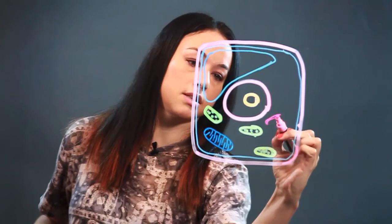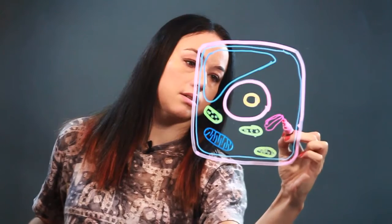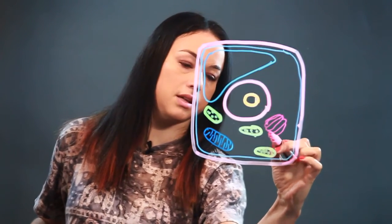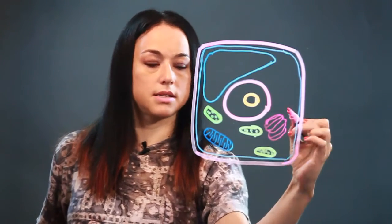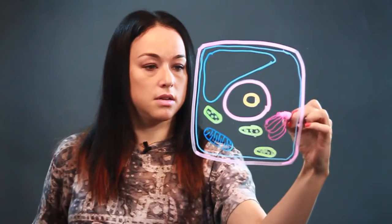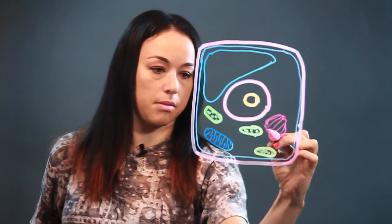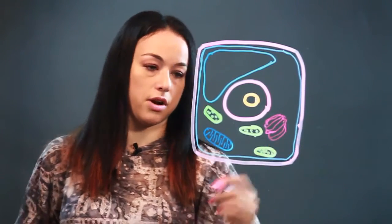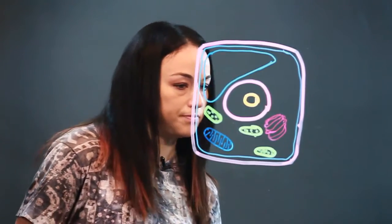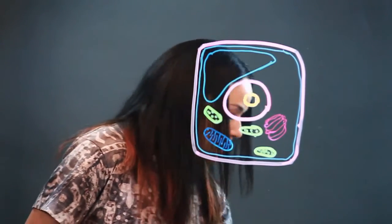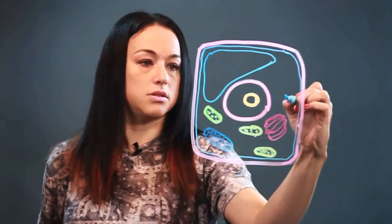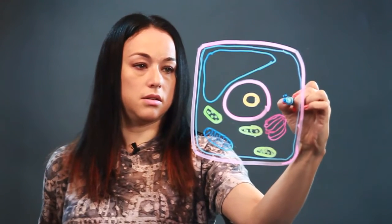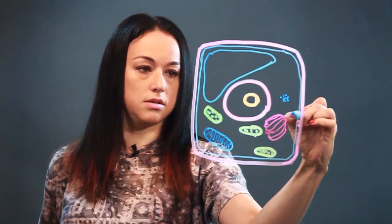Then there's this thing that looks like this, and it's called the Golgi body. It helps with the excretion process of the cell — it packages stuff for export from the cell. And there's also this stuff called ribosomes that looks like little dotty clusters.